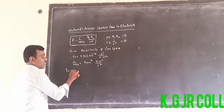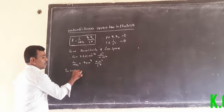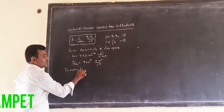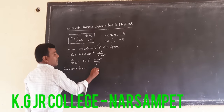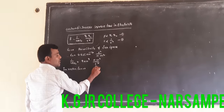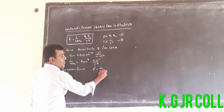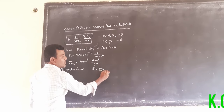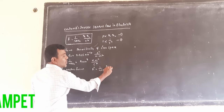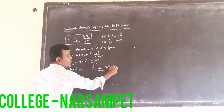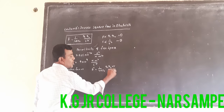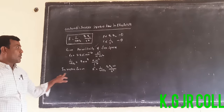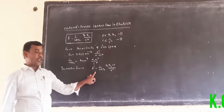In vector form, F vector is equal to 1 by 4π epsilon naught, Q1 Q2 into R hat by R squared. This is the vector form of Coulomb's law.